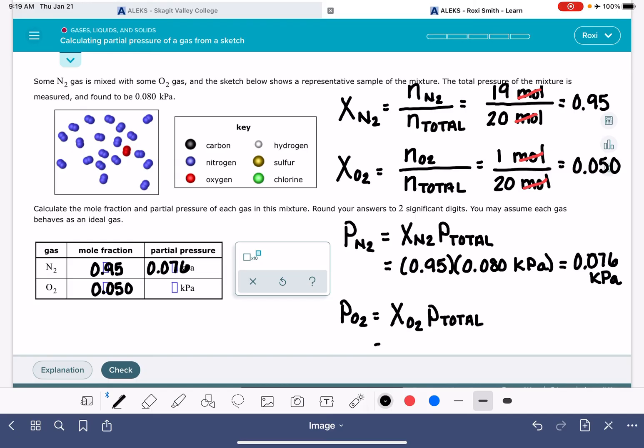For O2, our mole fraction of O2 is 0.050. The total pressure, again, is 0.080 kilopascals. And this is 0.0040 to two significant figures. You've got to add another zero on the end there.